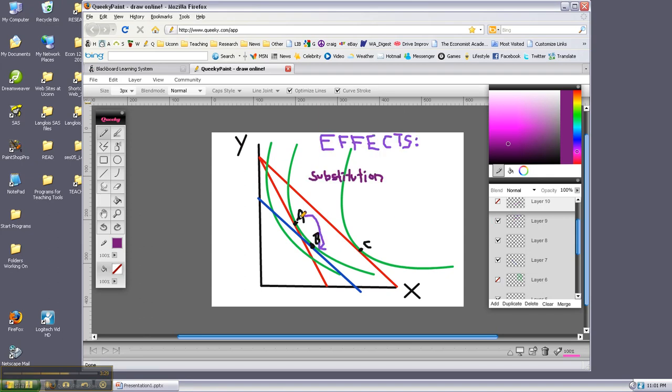And then this is called the substitution effect. Moving along the initial indifference curve at the new relative price ratio. Since we're on the initial indifference curve, real income is constant. And the only difference is the change in relative prices.